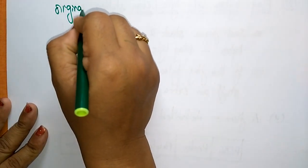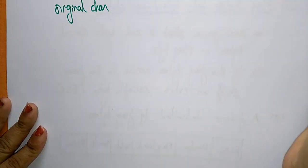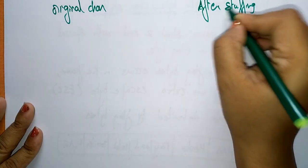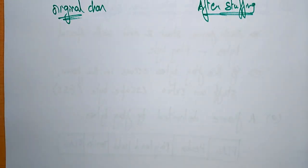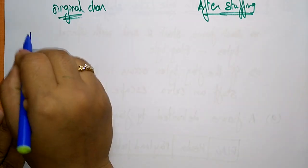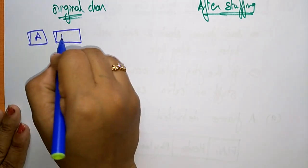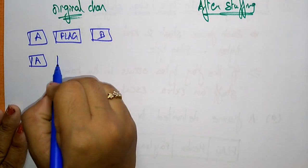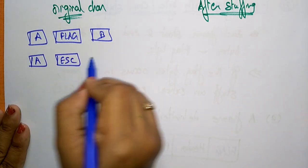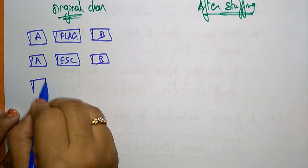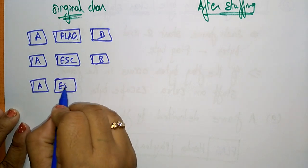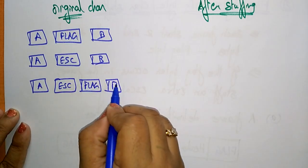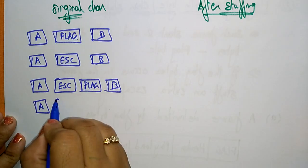This is the original character — before stuffing — and after stuffing. For the first example, the original sequence is: A, FLAG, B. The second original sequence is: A, ESC, B. The third is: A, ESC, FLAG, B.